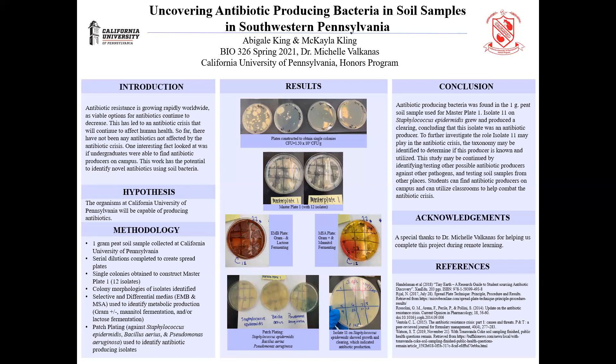We completed serial dilutions and ended up with a total of four agar plates, shown in the top picture. Our goal was to isolate single colonies needed to create our master plate. We used the 10 to the negative 4 plate to calculate the colony forming unit, or CFU, which was 1.5 times 10 to the 6th CFU per gram.